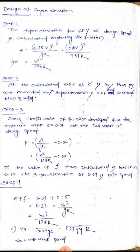In Step 4, e plus f equals 0.07 plus 0.15 equals 0.22. That is v² by gR. So v² equals 127R × 0.22, which gives v equals the allowable speed. This sets the maximum allowable speed for the given radius with maximum super elevation and friction.